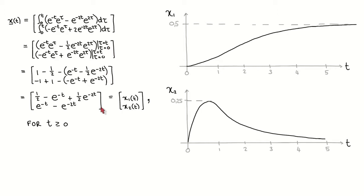What it means is that the states of the system in response to a unit step input will be described by these time functions. The behavior of state x1 is given by the first time function, which we can approximately plot as follows. The behavior of state x2 is given by the second time function, which we can approximately plot as follows. By plotting and analyzing the response of a system to certain input signals, we can gain insight into the dynamics of the system.